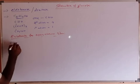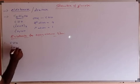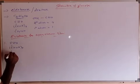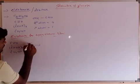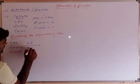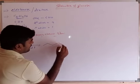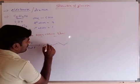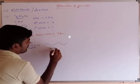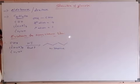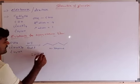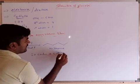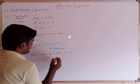The structure of glucose — CHO, CHOH repeated four times, CH2OH — reacts with hydroiodic acid in the presence of red phosphorus to give n-hexane (C1 through C6). This confirms that all six carbon atoms of glucose are arranged in a straight chain.